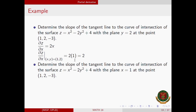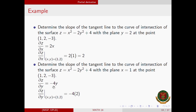Next, we find the slope of the tangent line to the curve of intersection with the plane x equals 1 at the same point. Since the plane x equals 1 is fixed, we look for the partial derivative of z with respect to y. x squared is constant so 0; 4 is constant so 0; and the derivative of negative 2y squared with respect to y is negative 4y. Substituting y equals 2, we get negative 4 times 2 equals negative 8. So the slope of the tangent line is negative 8.